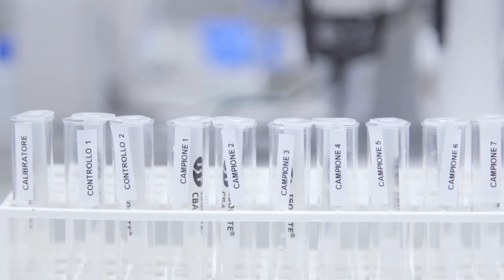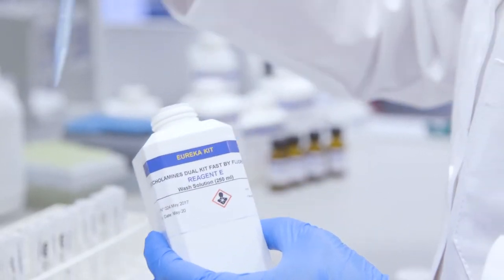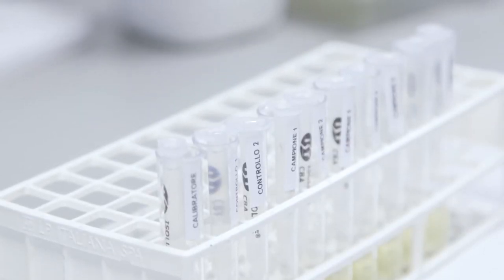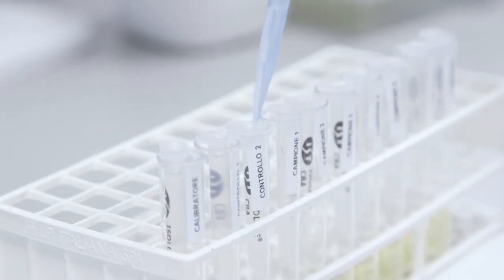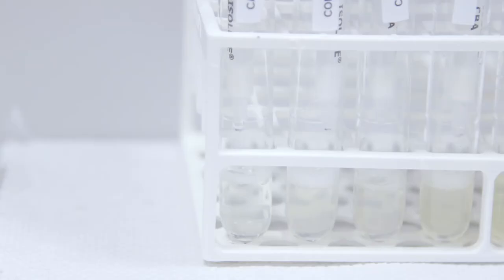At this point we wash the SPE column adding one milliliter of reagent E washing solution and repeat this operation twice. We conclude this operation by drying the resin with a light flow of air. These two washes allow us to eliminate all interfering substances.